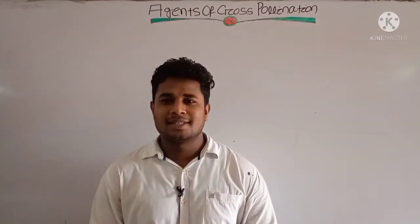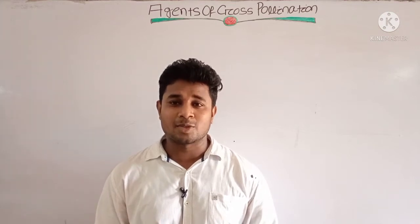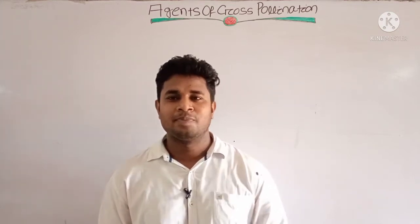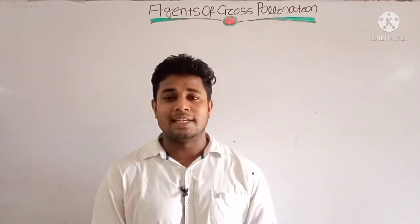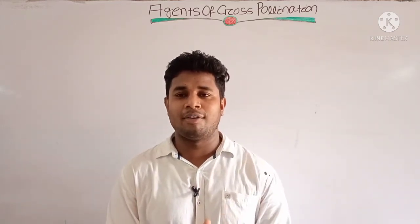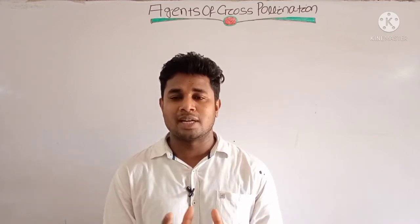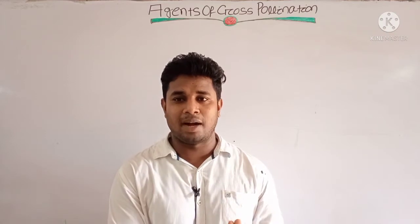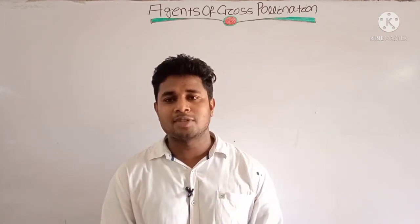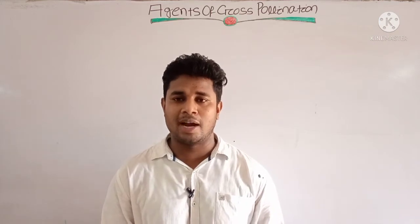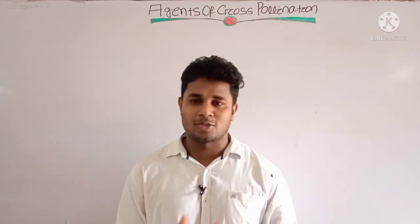Good morning students, welcome back to another video lecture from your chapter, that is Sexual Reproduction in Flowering Plants. In the last two to three videos, we have been discussing in detail about the processes of sexual reproduction in flowering plants. And already we have studied the pollination part, where two types of pollination are involved: one is self-pollination and another one is cross-pollination.